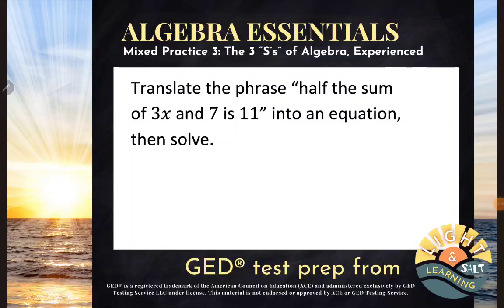Hello, algebra students. Fair warning, I'm gonna be tricky and combine two GED skills into this one problem. Let's take a look. It says, translate the phrase, half the sum of three X and seven is 11 into an equation, then solve.